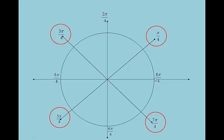Here are the π/4 angles. Again we start at 0 and go: π/4, 2π/4, 3π/4, 4π/4, 5π/4, 6π/4, 7π/4, and 8π/4. The ones circled are the real π/4 angles; the quadrantals are just placeholders as we go around the circle.